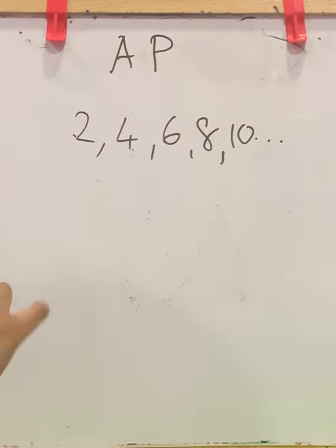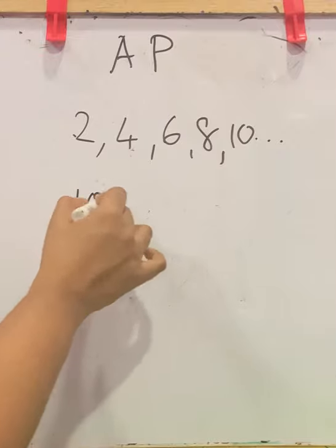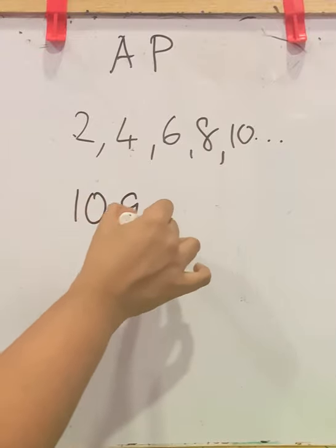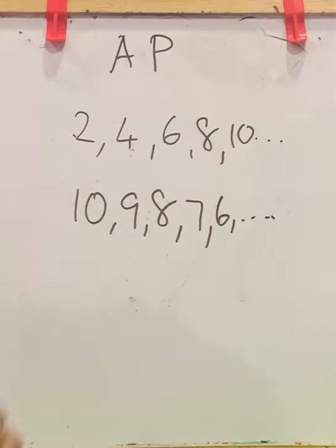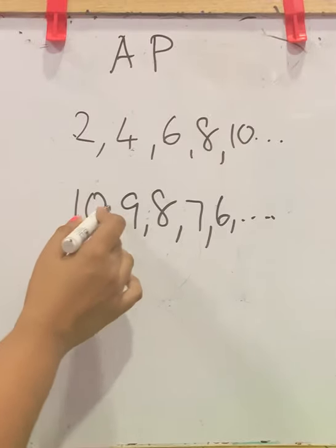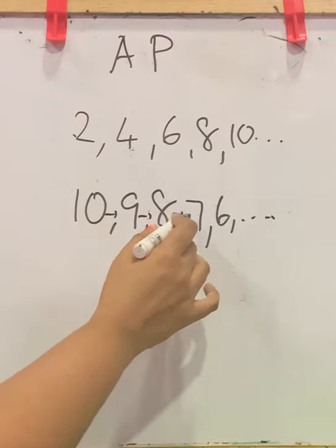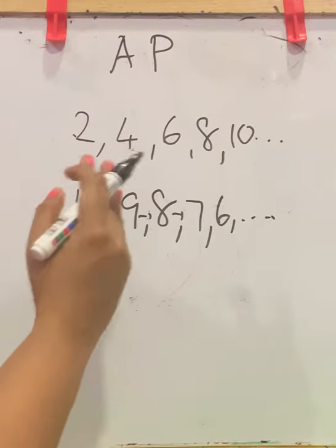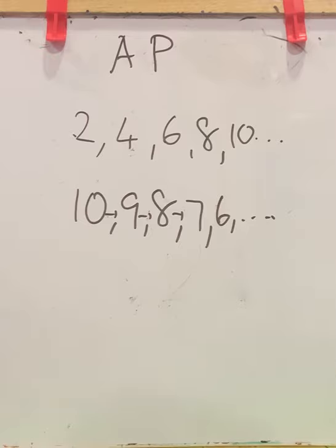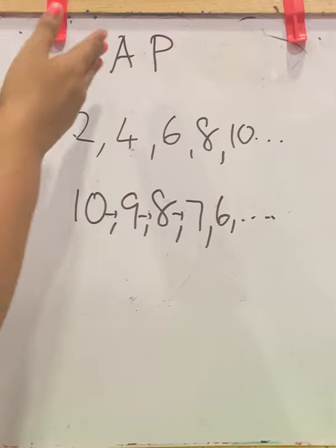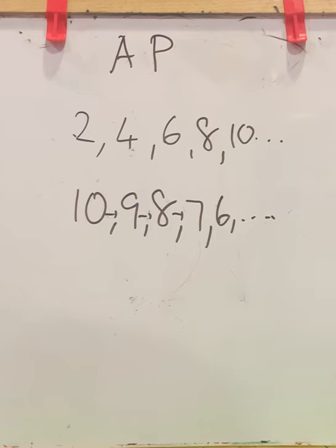Now consider another sequence like this. This is also a sequence because it has a particular order — each number is less by 1. The numbers are followed by a difference of 1. So these are different types of sequences, and now we are going to talk about arithmetic progression.